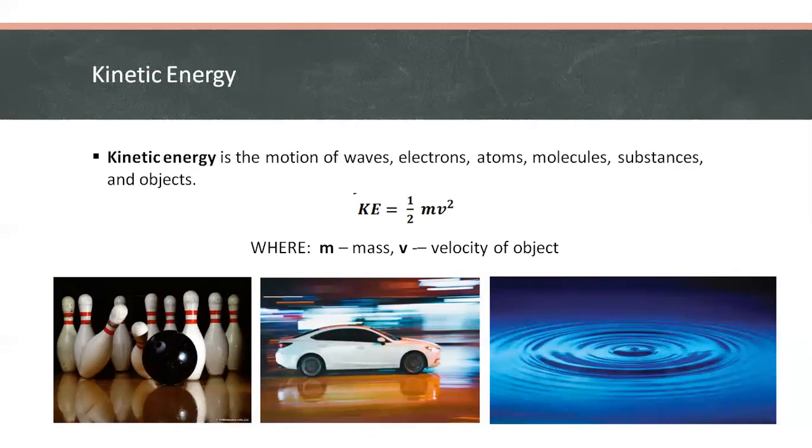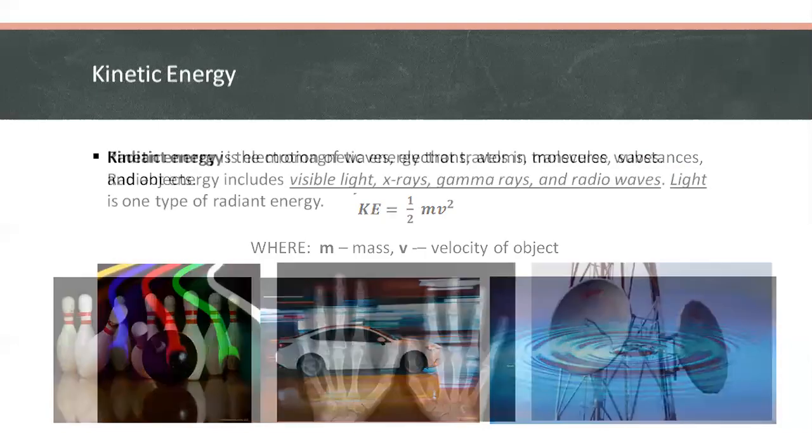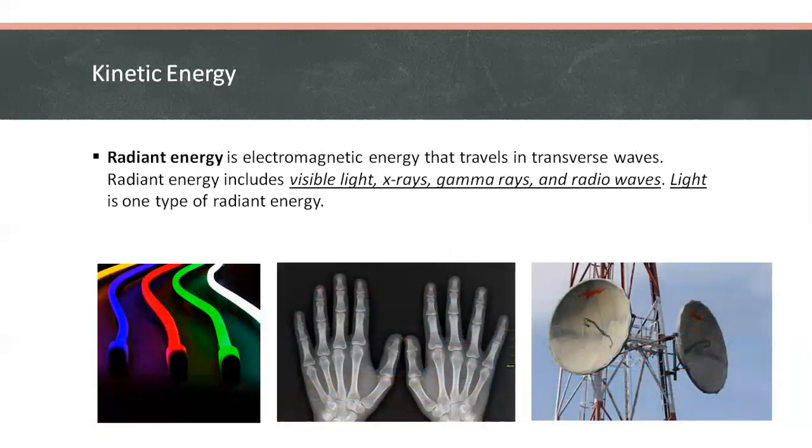Under this, we have five forms of energy. The first one is radiant energy, which is also called electromagnetic energy that travels in transverse waves. It includes visible light, gamma rays, x-rays, gamma rays, and radio waves. Light is one type of radiant energy.